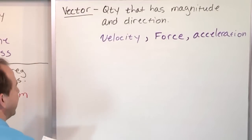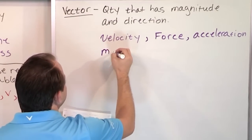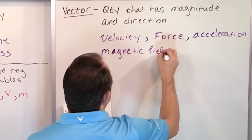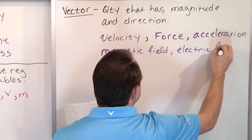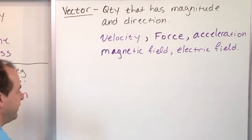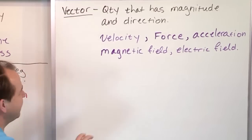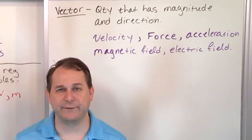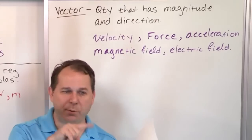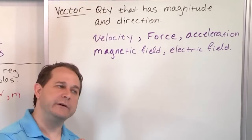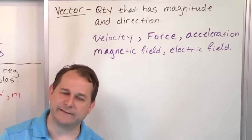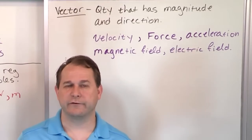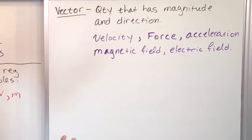We're also going to list some other vectors we'll get to much later, like magnetic field and electric field. You've all seen magnets — there's an invisible field we call a magnetic field, and that field is a vector field. Every point in space around the magnet has a strength but also a direction — it's pointed different ways. Those are the field lines that come out, and we call those vector quantities at every point. This is the difference between scalar and vector.